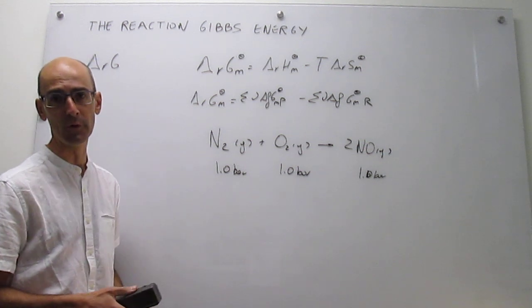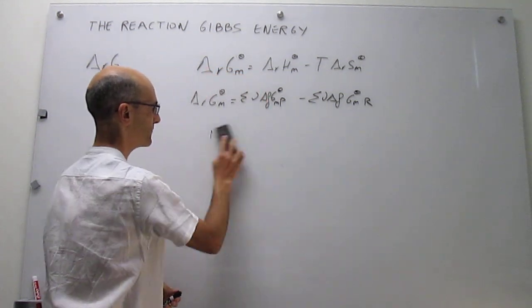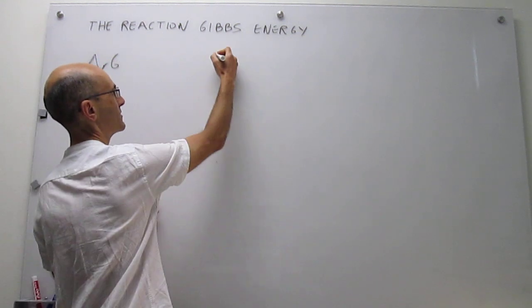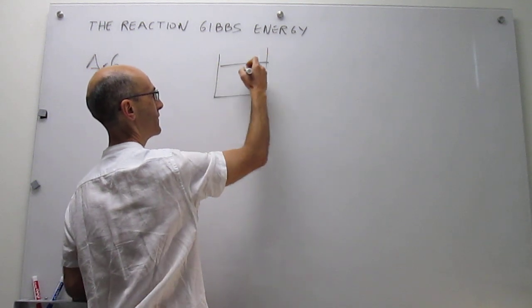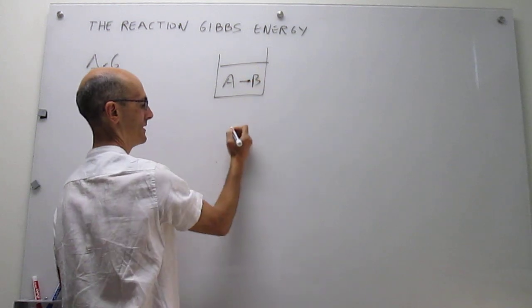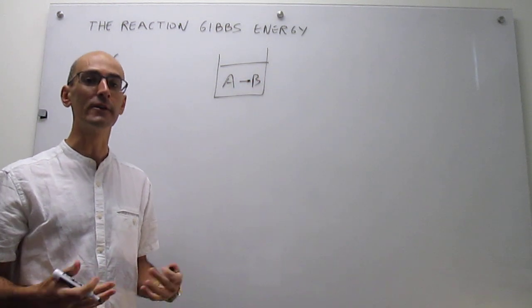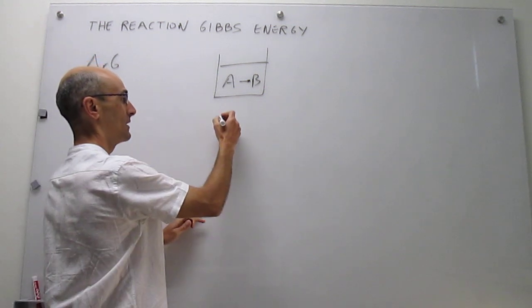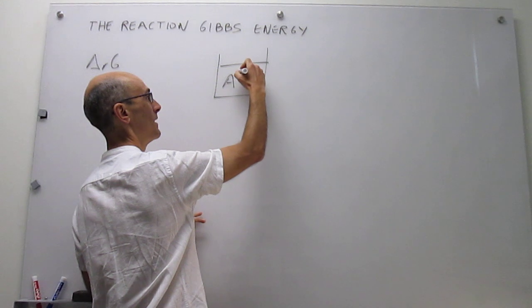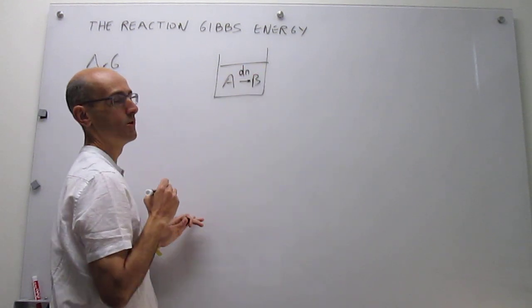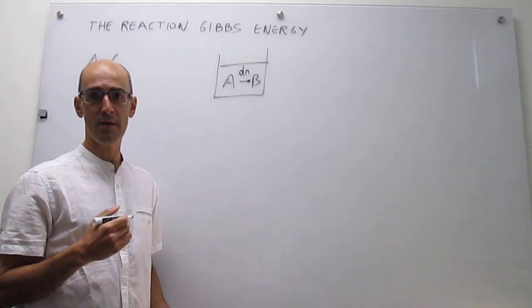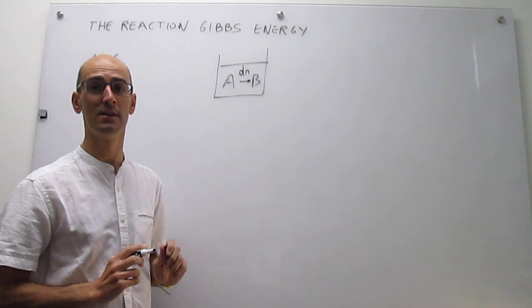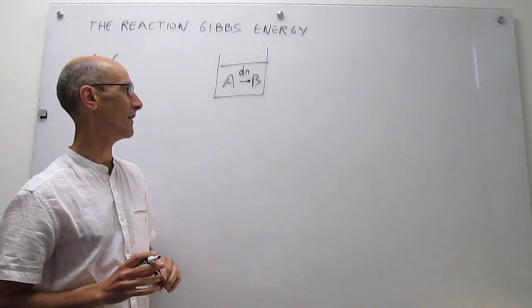Let's design a very simple chemical reaction in solution. We have a reaction A going to B, two different substances at different concentrations. The definition of the reaction Gibbs energy is as follows: we assume that a tiny, infinitesimal amount — a few moles of A — turns into B, and then we calculate the change in Gibbs energy in that process. That gives us the reaction Gibbs energy under the conditions, i.e., at the concentrations, that A and B are currently at.